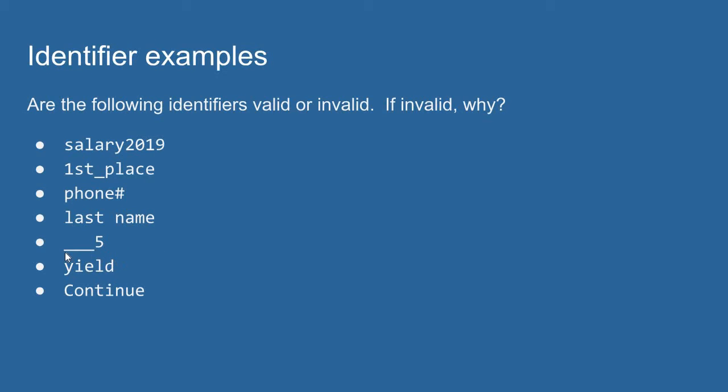Our next example has a couple underscores, followed by the number 5. This looks a little weird, but this is technically a valid identifier because it uses valid characters and doesn't start with a number. However, we are not following convention here. This is not a very well-named identifier.